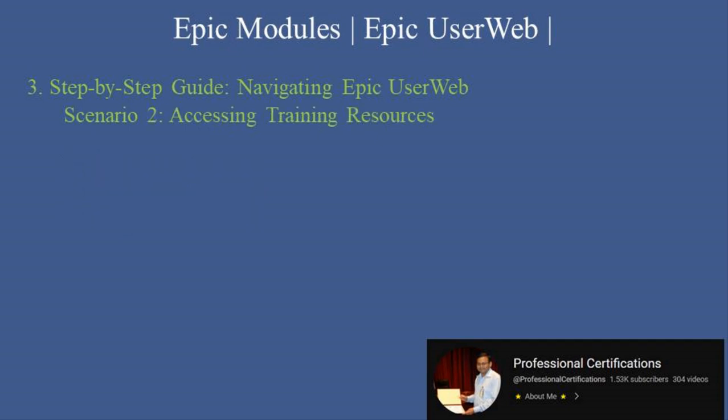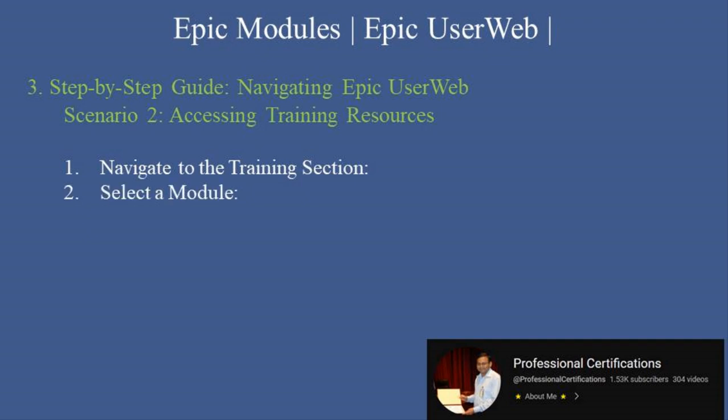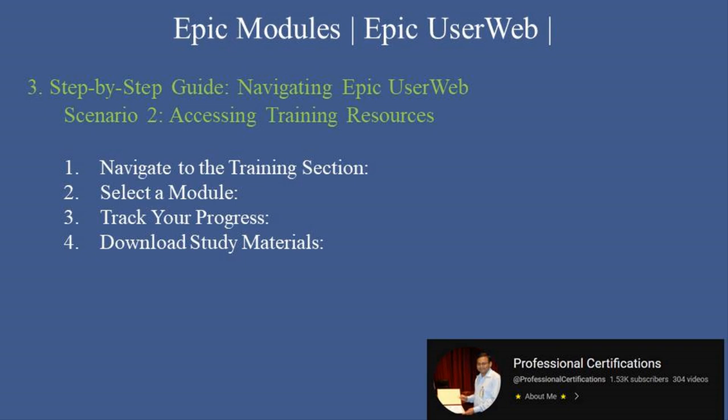Scenario 2 — Accessing Training Resources. First, navigate to the Training section by clicking on the Training tab in the main menu. Second, select a module — choose from a variety of training materials, such as certification courses or role-specific tutorials. Third, track your progress using the progress tracker to monitor completed modules and plan your learning path. Fourth, download study materials — access PDFs, videos, and guides for offline use.